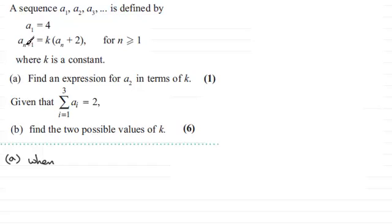So when n equals 1, you can see we're going to get a_{1+1}, which is a2. Therefore, a2 is going to equal k multiplied by a1 plus 2. So what is a1? Well, we're told that a1, the first term in the sequence, is 4. So we've got k multiplied by 4 plus 2. In other words, the second term is 6k.